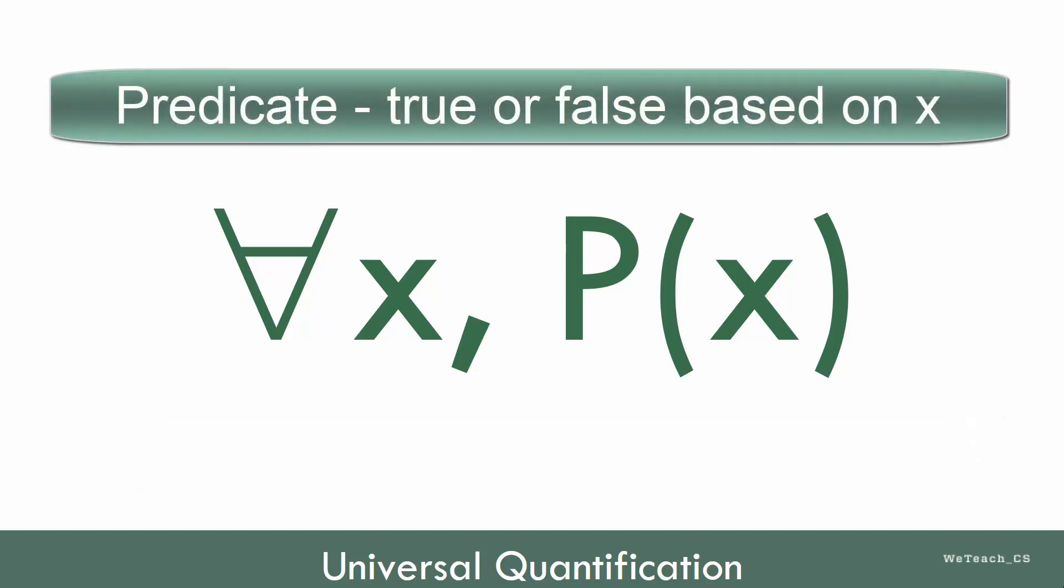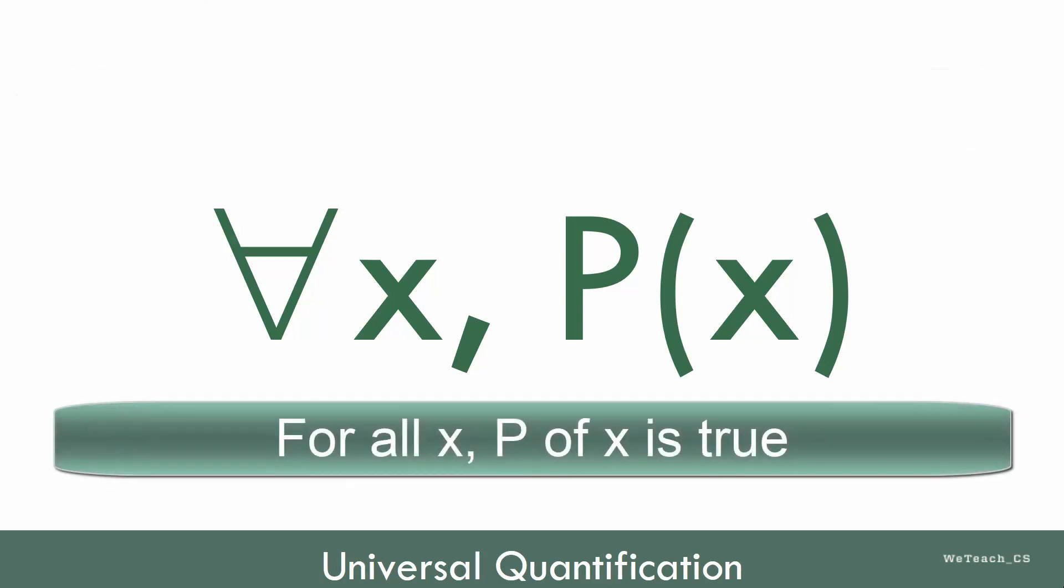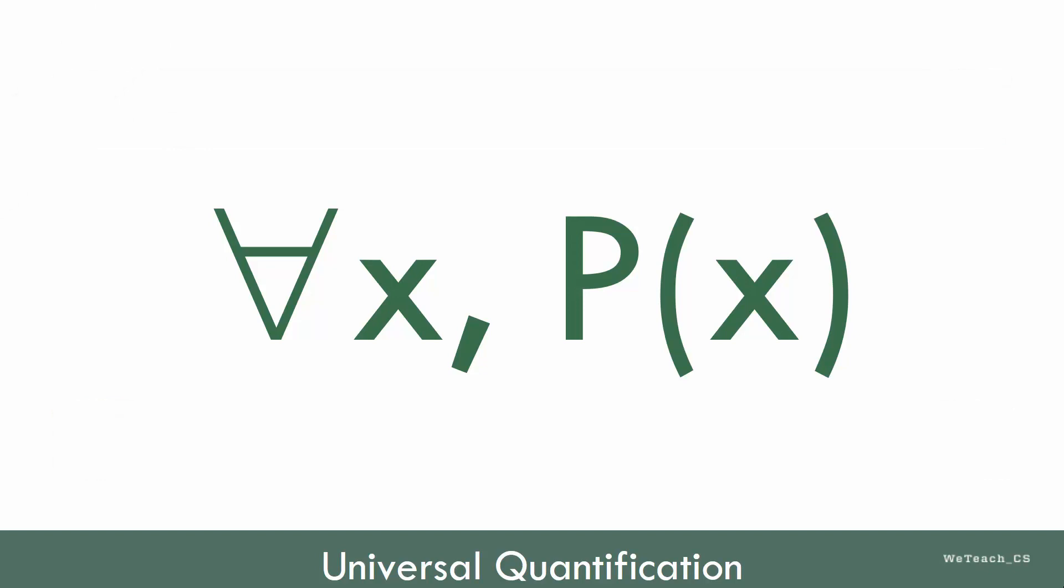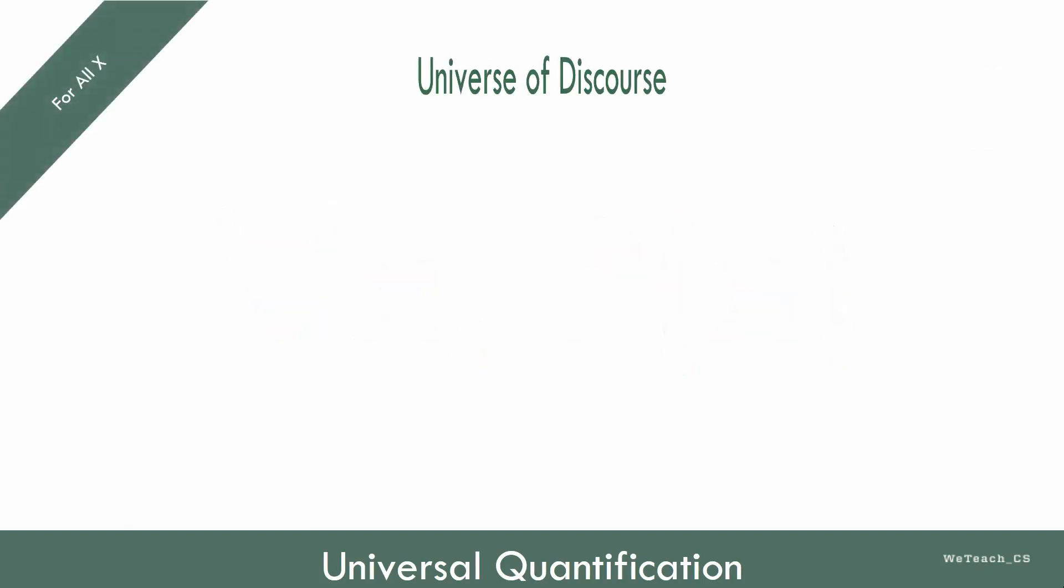A predicate is true or false based on the value being considered. This statement is read, For all values of X, P is true. It is like an implication, but instead of just one value being used, it considers an entire set of possible values found in the set called the universe of discourse.